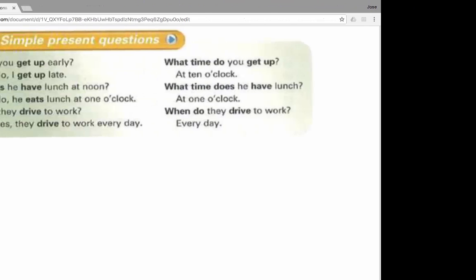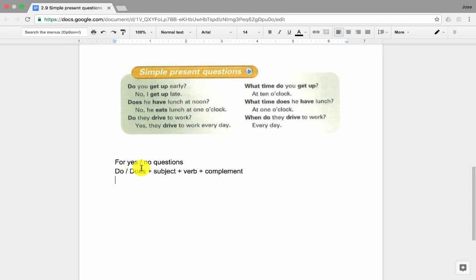On the left side of the chart, you can see yes or no questions. So if you recall the formula that I mentioned a minute ago, for yes or no questions: do or does plus the subject plus some kind of verb plus a complement.